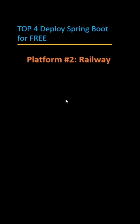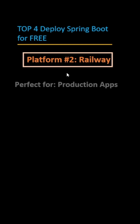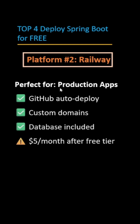Platform number two is Railway. Railway is perfect for production apps. The properties are GitHub Auto Deploy, Custom Domains — you can attach your own .com, .in, whatever — database included, and $5 per month after the free tier.